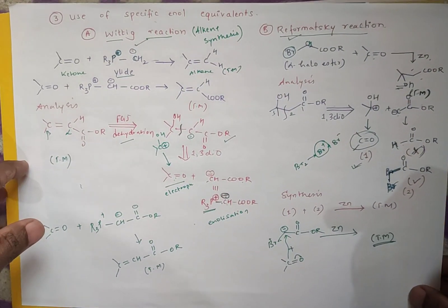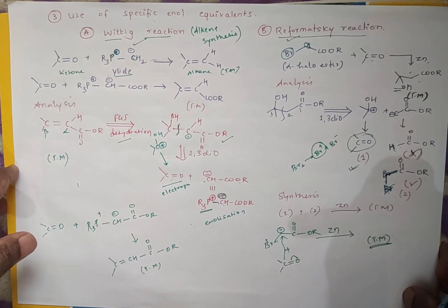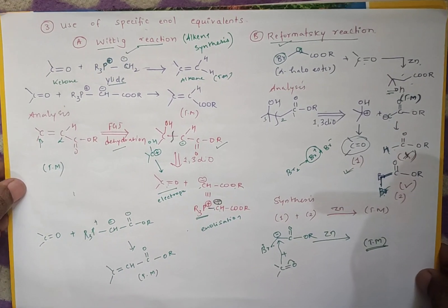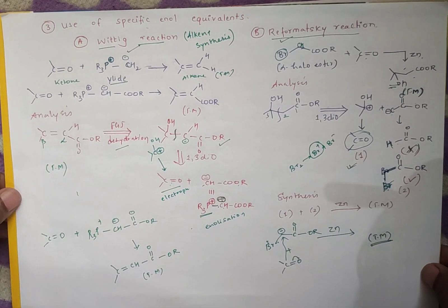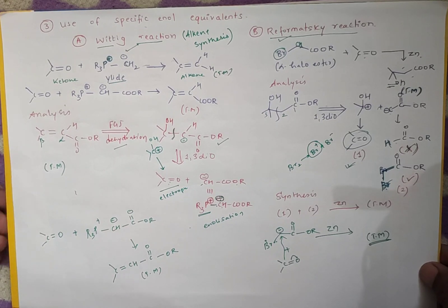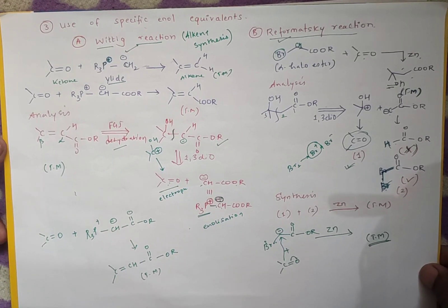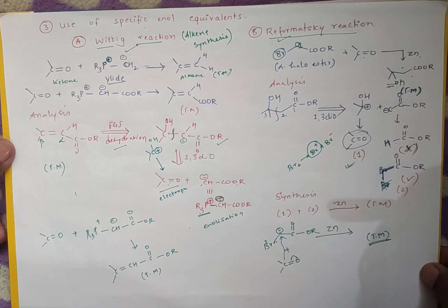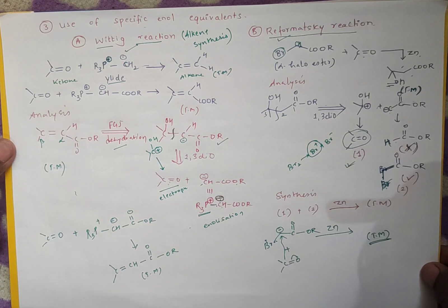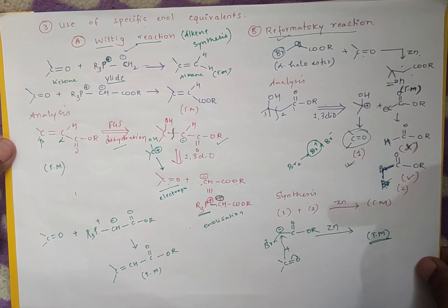Here, we are using specific enol equivalents in the form of the Wittig reagent and the Reformatsky reaction. This is what controlling carbonyl condensation is. I hope you have followed it. If you like the video, please like it, comment, and share it. Keep watching my channel for the MSA syllabus, and thank you.